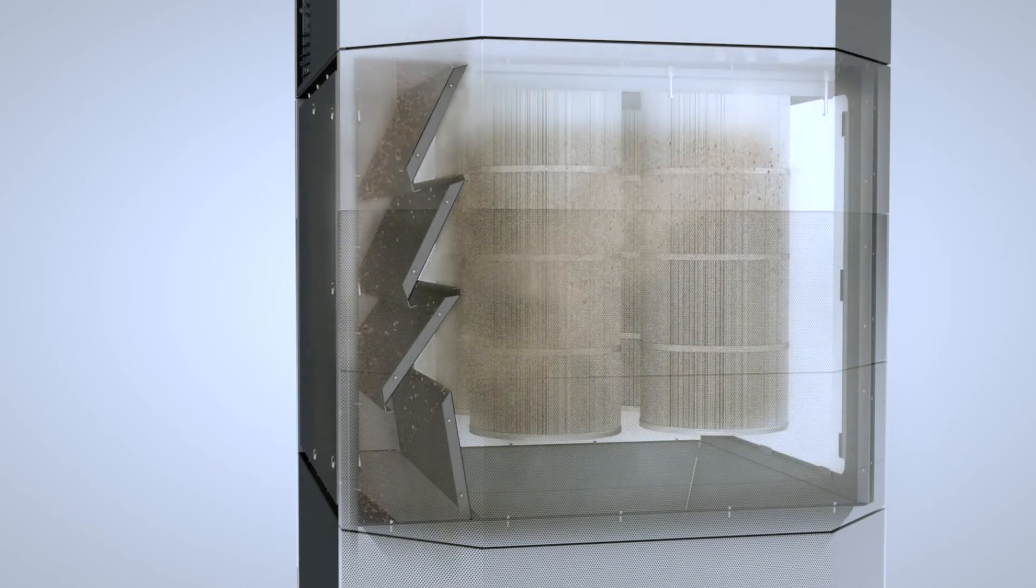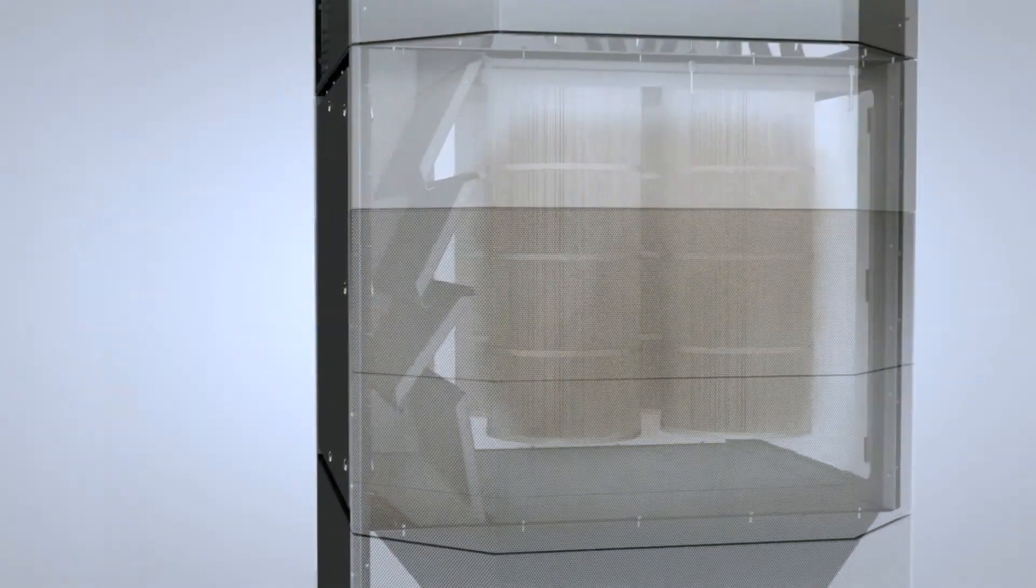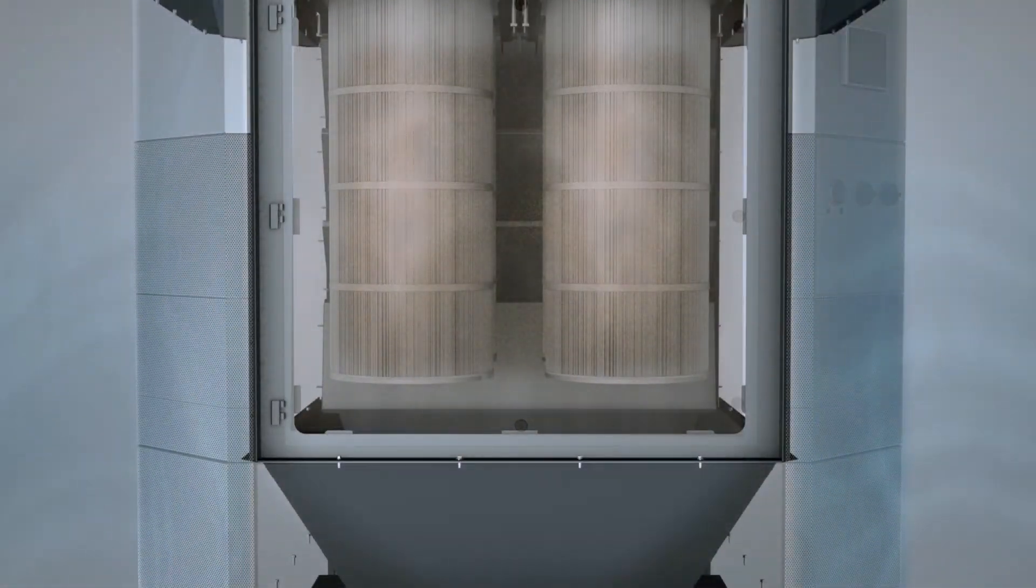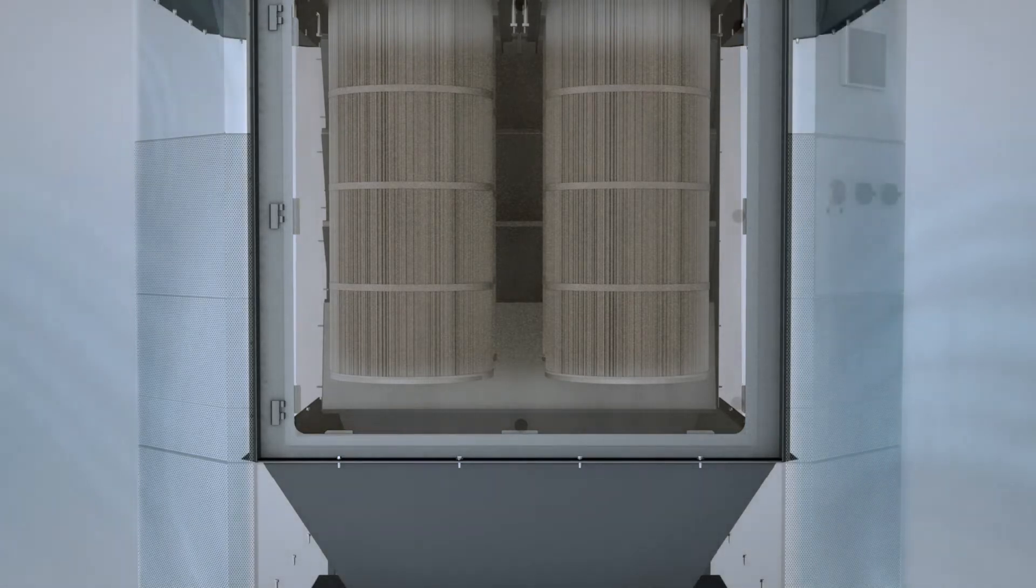This reduces the risk of filter fire caused by potentially sucked-in sparks. Filter cartridges with dust classification M almost completely separate the remaining fine particles. The separation efficiency is 99.9 percent.